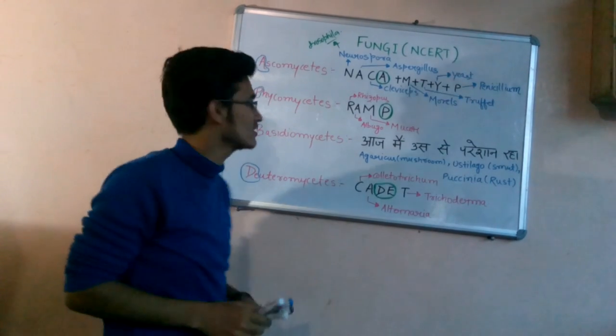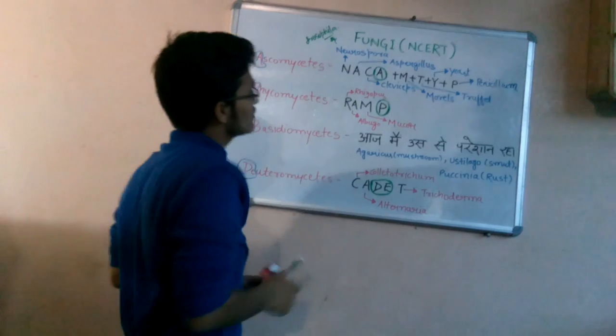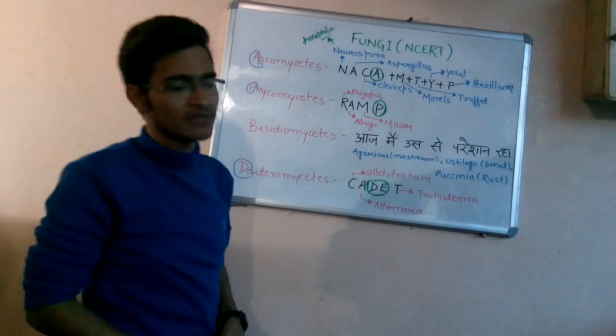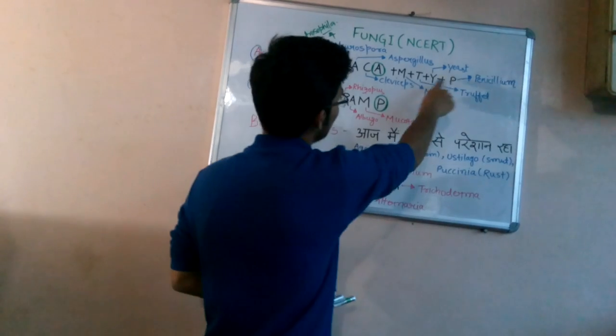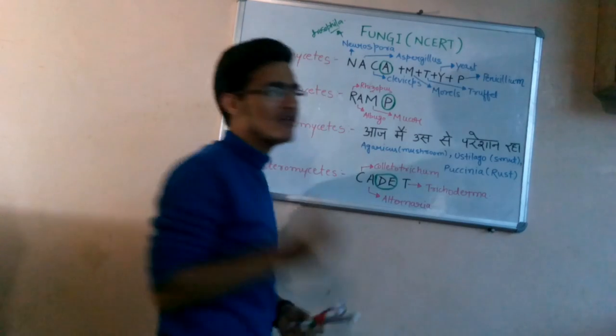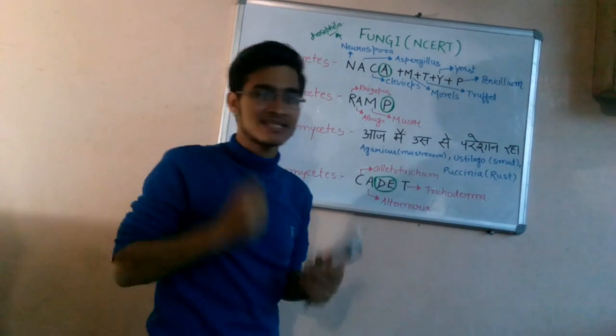A simply means Aspergillus. S means Claviceps. You all know about Claviceps purpurea. These are some different examples.